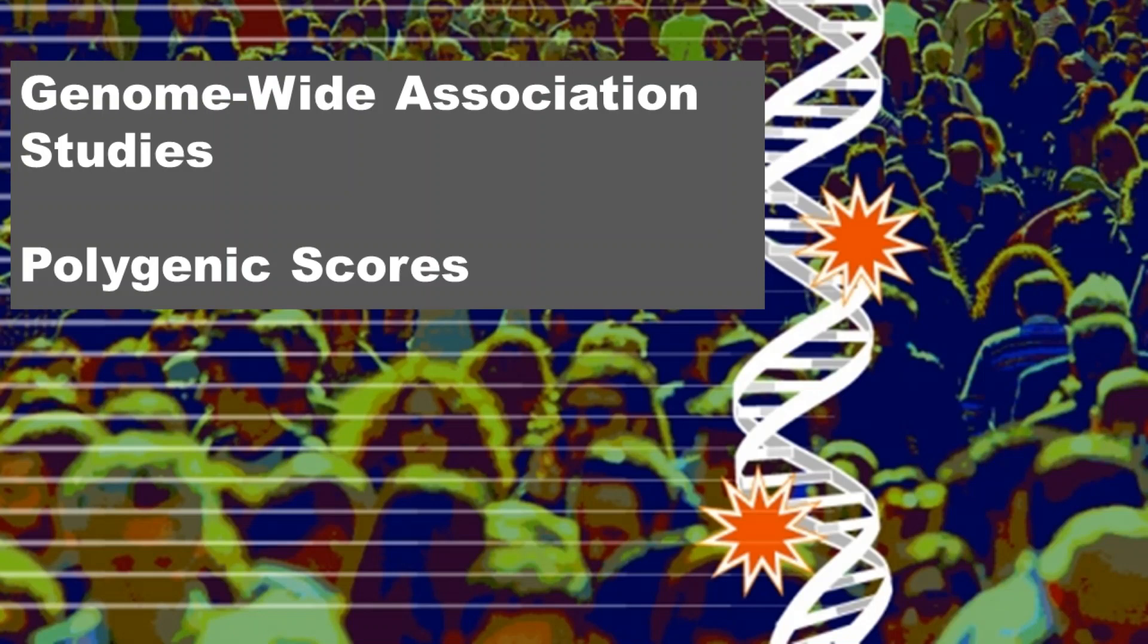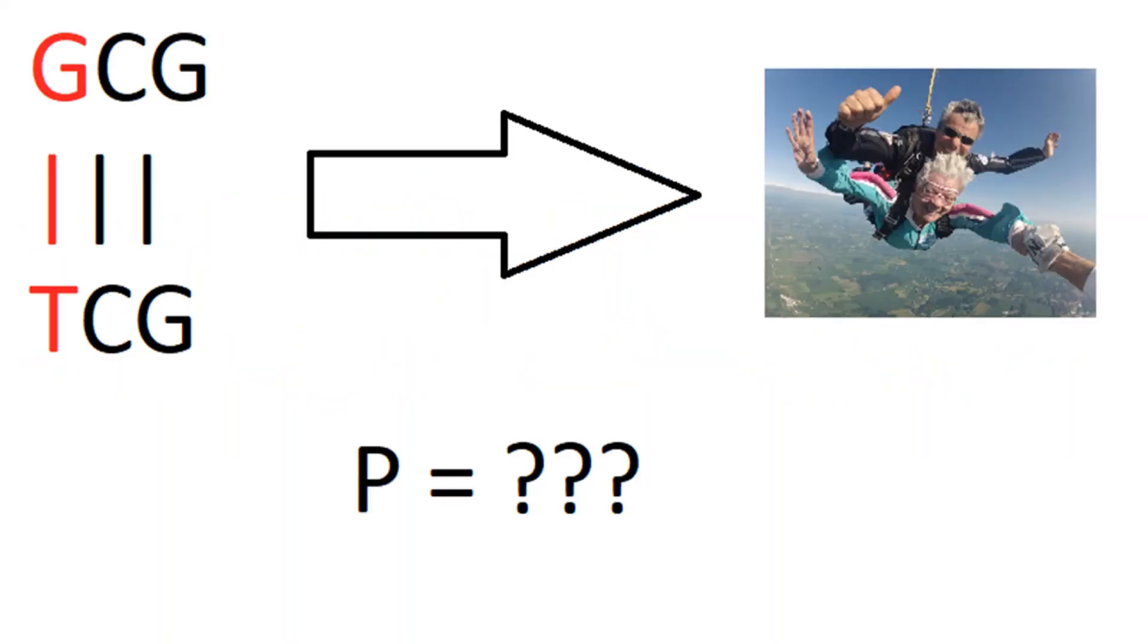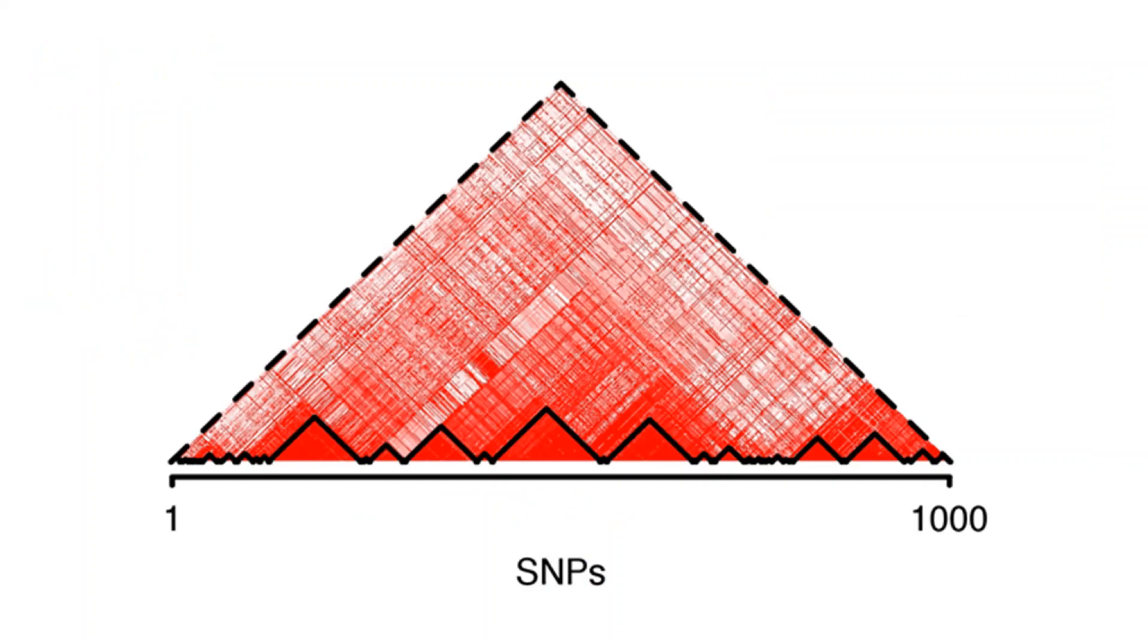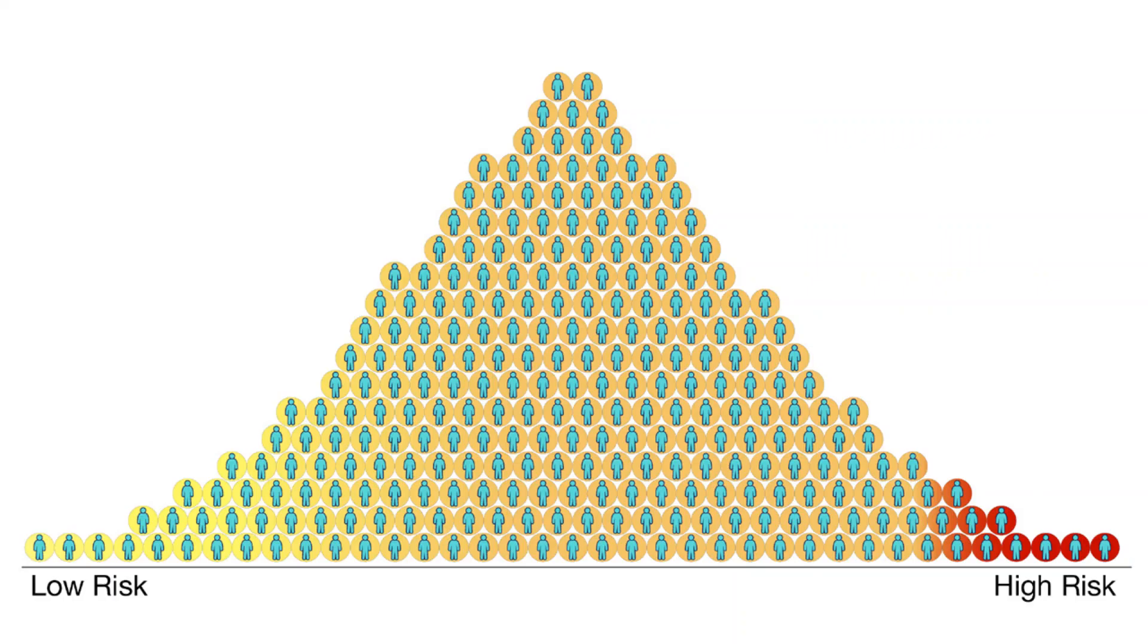Welcome to part 4 of this video series on genome-wide association studies. In previous videos, we have discussed the relationship between genetic variants and traits, linkage disequilibrium, and the statistical methodology used to detect associations between genetic variants and complex traits. In this video, we will discuss one of the uses of genome-wide association studies, which is the development of polygenic scores.